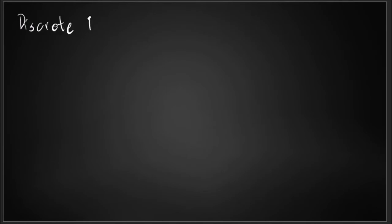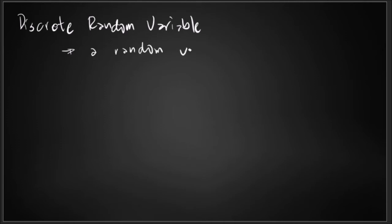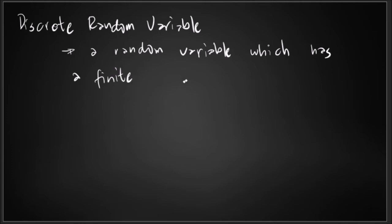Next, we have a discrete random variable. A discrete random variable is a random variable which has a finite number of values. Going back to our previous example of tossing a coin, we have a finite number of possible outcomes.